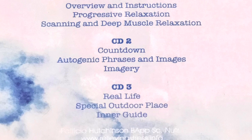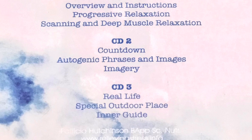We'll count forward now from one to five. As you take a deep breath, silently say each number. When you reach five, you'll open your eyes feeling relaxed and alert. You will find yourself back in the room you left, and the environment will seem slower and calmer and you'll feel more relaxed and peaceful. You will be relaxed, peaceful and calm. One — still deeply relaxed. Two — feeling very relaxed. Three — feeling more alert and aware of the sounds around you. Four — feel more alert but relaxed. Five — open your eyes, you are alert and refreshed.